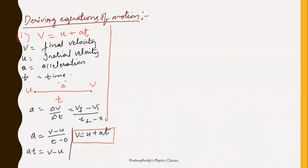The physical meaning is that final velocity equals initial velocity plus the increase in velocity. Here u is the initial velocity and at is the increase in velocity. If you add the increase in velocity to the initial velocity, you will get the final velocity at that particular point.